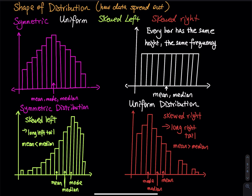The third type is called skew left. The way to remember it: left means there is a long tail on the left. We have a tall mountain on the right and a long tail on the left — that is skew left. The mode is always the tallest bar.